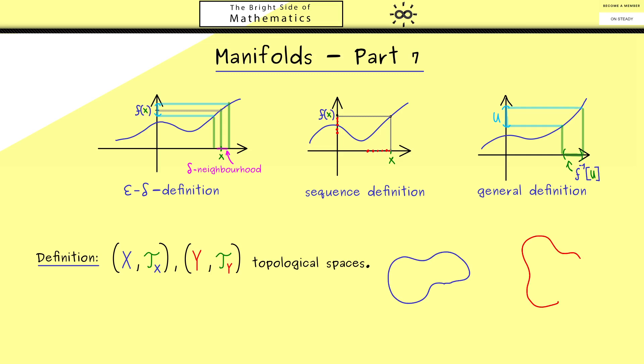For this reason the best visualization would be that we have a set X on the left hand side and a set Y on the right hand side. And then we simply have a map f from left to right, from X to Y.